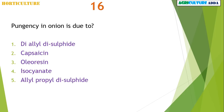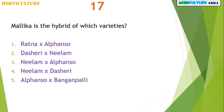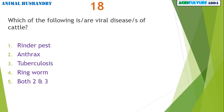Which of the following nutrients are immobile in soil? Phosphorus and organic nitrogen. Pungency in onion is due to allyl propyl disulphide. Malika is the hybrid of which variety? Neelum and Dasheri.